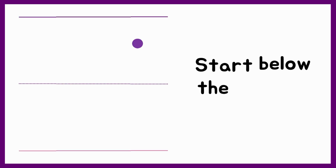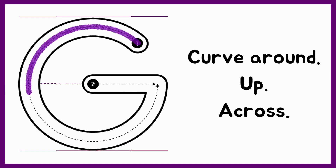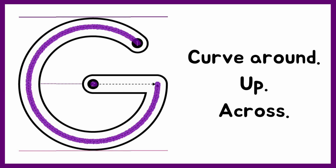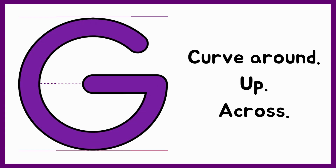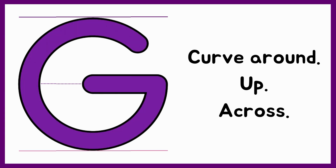Let's begin with the uppercase or big G. To write the uppercase G, we start below the top line. Curve around, up, across. Let's try that again. Curve around, up, across. Now you try.